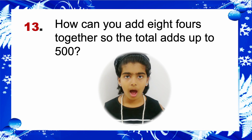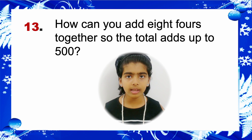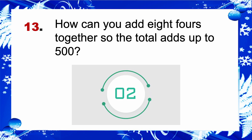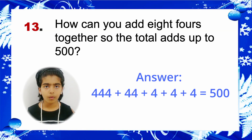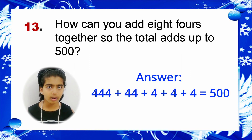Riddle 13: How can you add eight 4's together so the total adds up to 500? Answer: 444 plus 44 plus 4 plus 4 plus 4 is equal to 500.